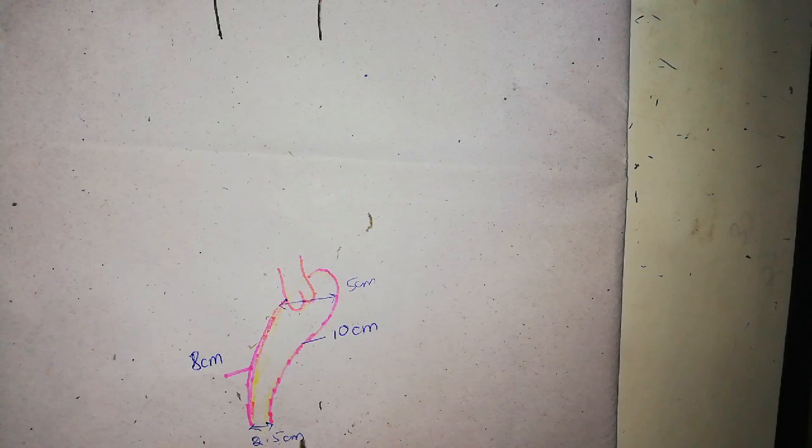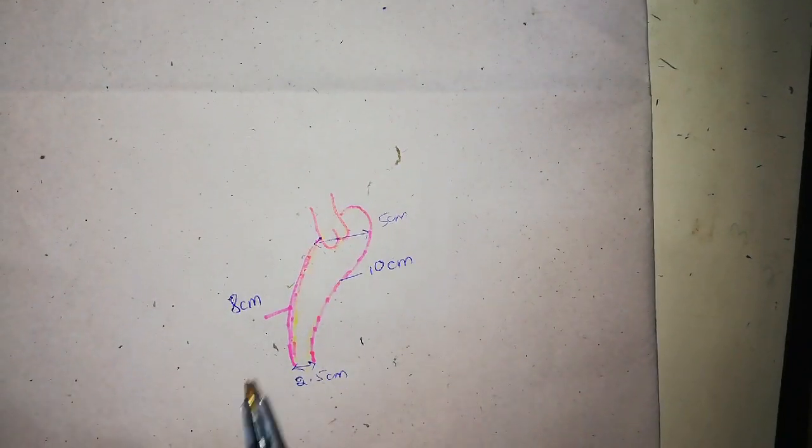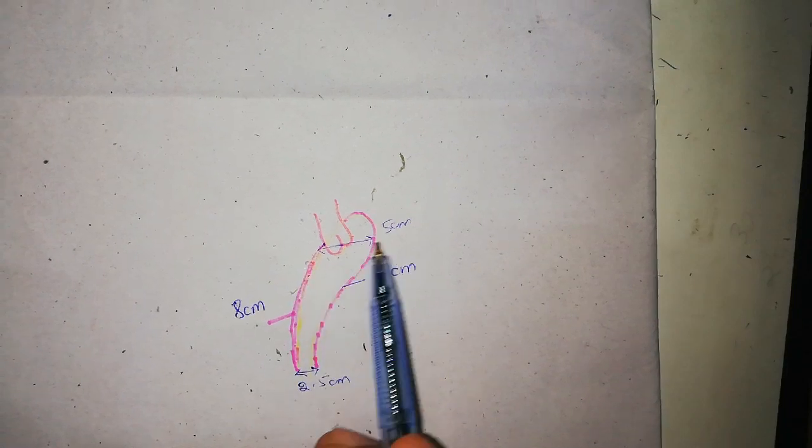Vagina is highly distensible because head of fetus is much larger, very much larger than this. And during delivery, this vagina expands and allows that head of the fetus to pass.